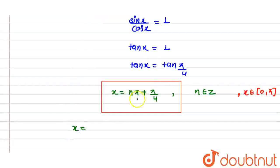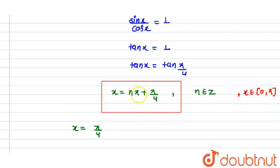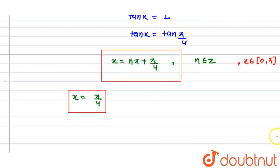तो अगर हम n = 0 रखते हैं, तो x = π/4 आता है। अगर n = 1 रखें तो π + π/4 आएगा जो interval से exceed कर जाएगा, और n = -1 रखने पर negative में चला जाएगा। तो यहाँ से सिर्फ x = π/4 आएगा — सिर्फ एक critical point।